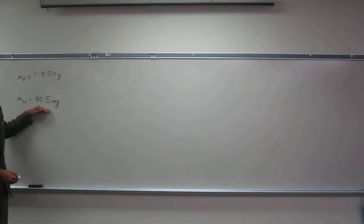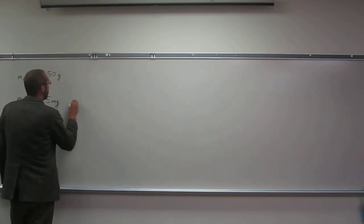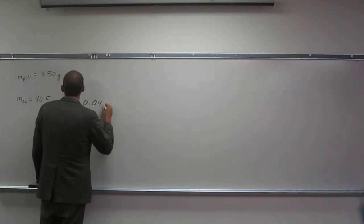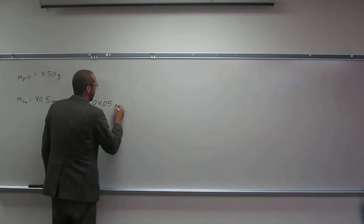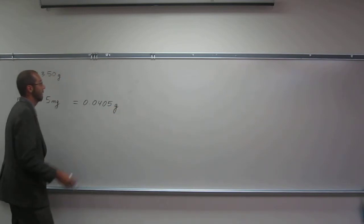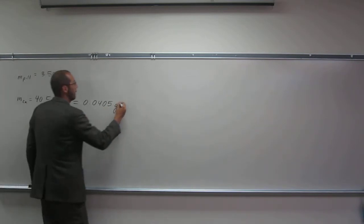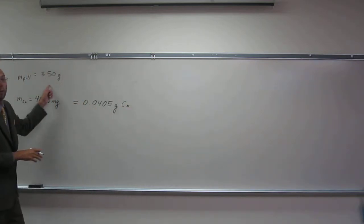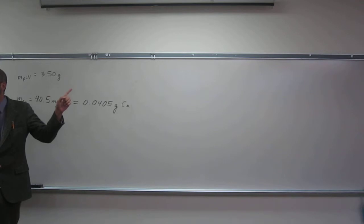So the first thing we're going to have to do is get these two units in the same unit. If you prefer to take this to milligrams or this one to grams, I'll take this one to grams. That's going to be 0.0405 grams of calcium. Calcium at 3.50 grams altogether total in the pill.